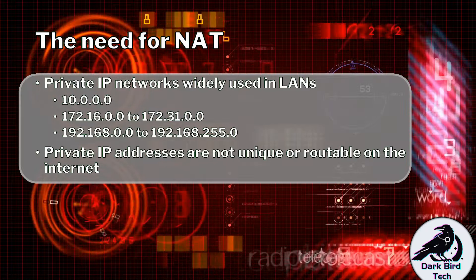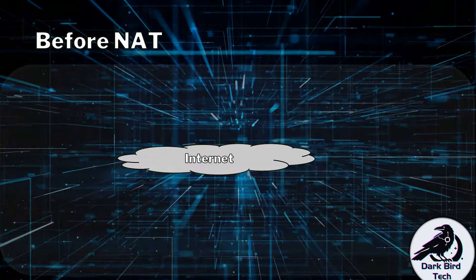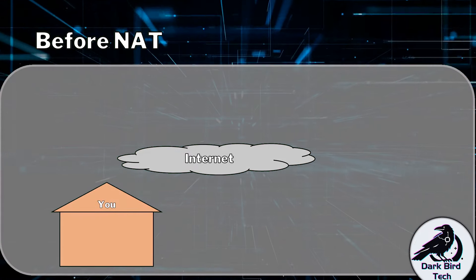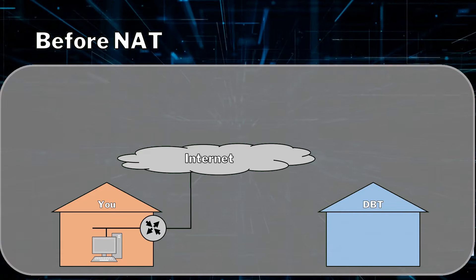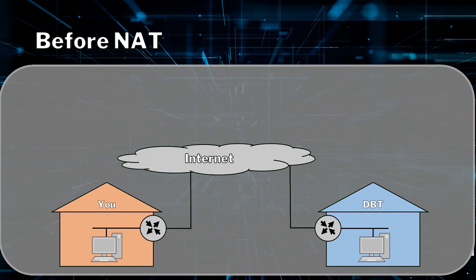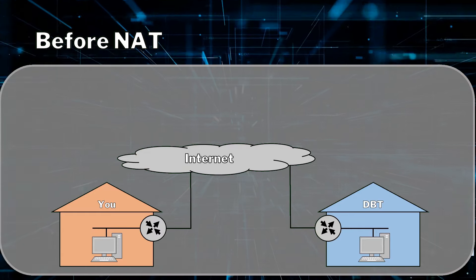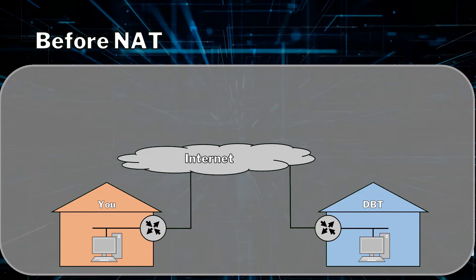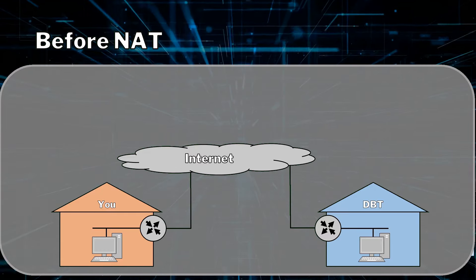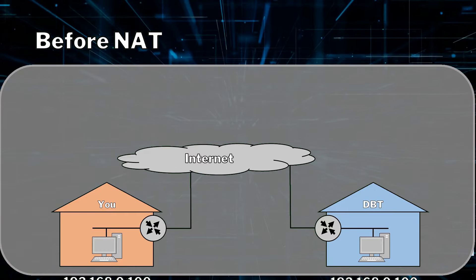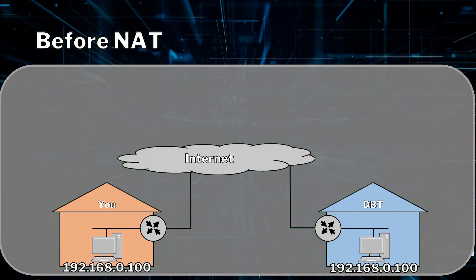So let's see what it was like before NAT was a thing. We'll have the internet, then we'll have you sitting at home on your network, and then there'll be me sitting at home on my network. By a sheer bit of coincidence, you and I have the same small office home office router, which means our DHCP server probably works the same, and we both ended up with the same private IP address: 192.168.0.100.